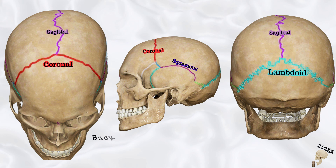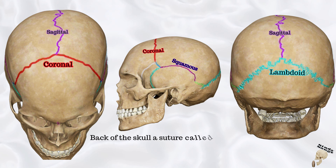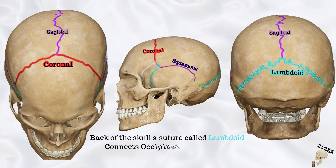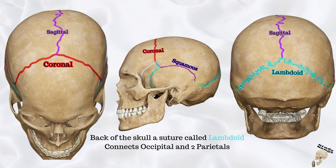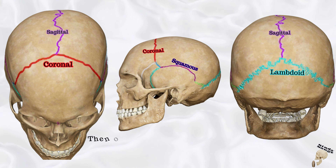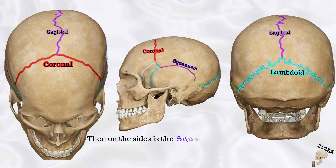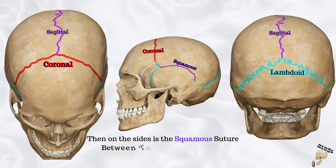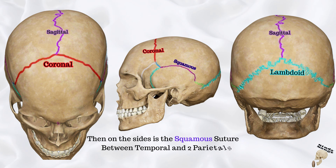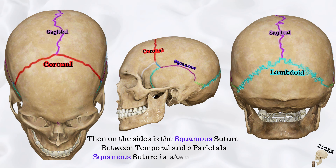Between two parietals, that is the sagittal. Back of the skull is a suture called lambdoid — connects the occipital and two parietals. Then on the sides is the squamous suture, between temporal and two parietals. Squamous sutures also called lateral. Sutures of the skull, they hold bones together.